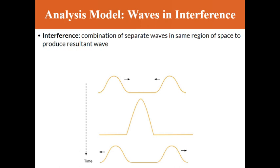Here you see each part of the graph from top to bottom shows a progression of time, where you have two pulses moving in opposite ways. Unlike bumper carts, these pulses actually overlap and create a pulse that's double their height, double their amplitude, and then split off, continuing their travels as if nothing happened.